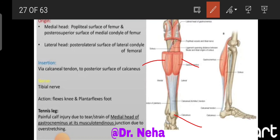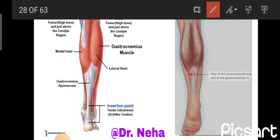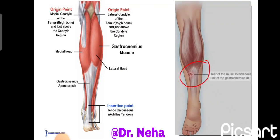The action of the gastrocnemius is flexion of the knee and plantar flexion of the foot. The clinical anatomy related to this muscle is the tennis leg — a painful calf injury due to tear or strain of the medial head of the gastrocnemius and its musculotendinous junction due to overstretching. This results in pain in the back of the leg.